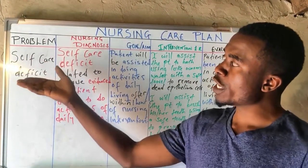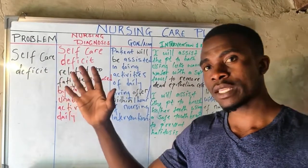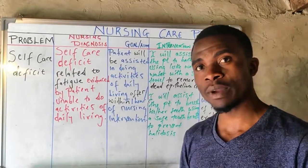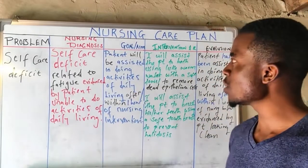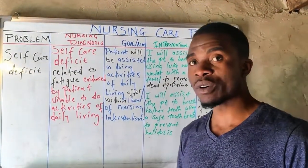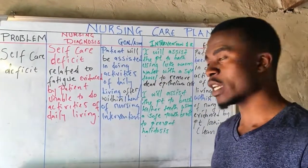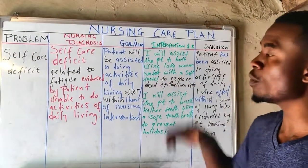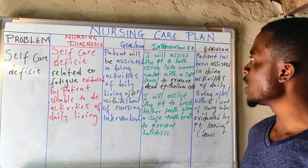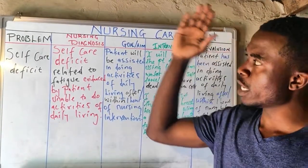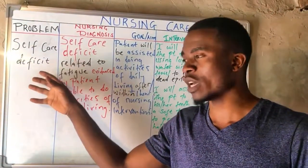We also need to understand the columns. There are five columns in the nursing care plan. The first column is where you write the problem. The second column is where you write the nursing diagnosis. The third column is where you write the goal or aim. The fourth column is where you write your nursing intervention and the rationale. The last column is where you write the evaluation.